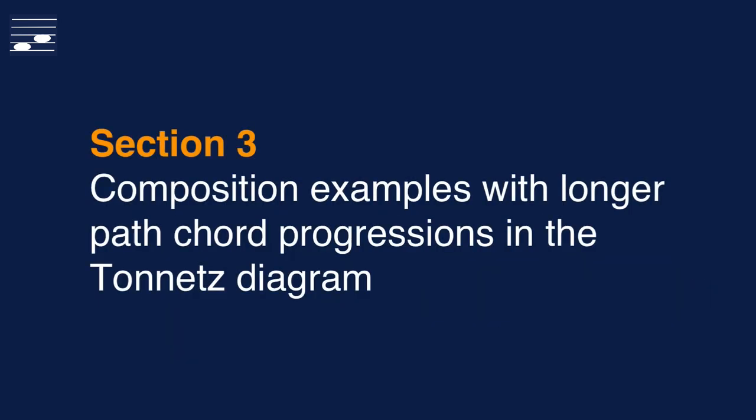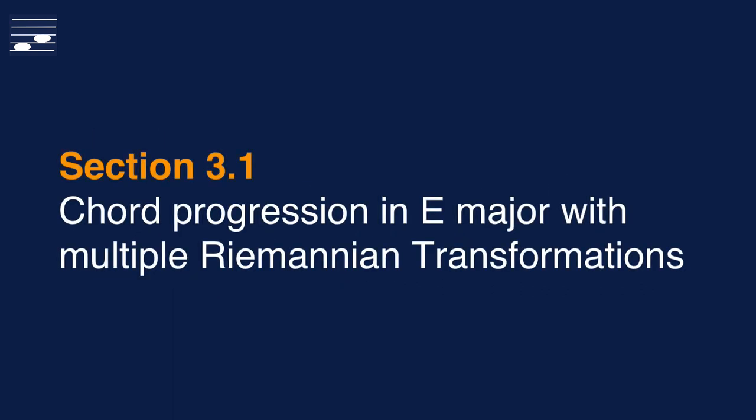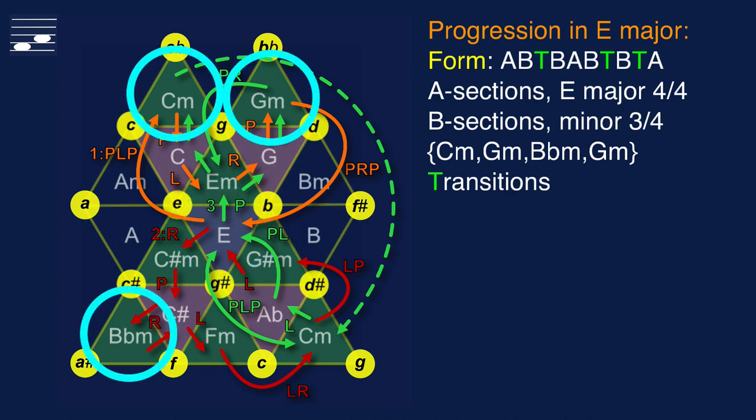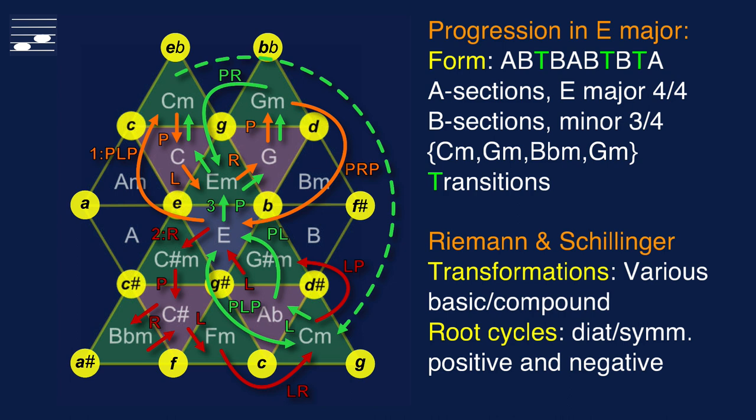Now let's turn our attention to the two long and winding Tonnetz path examples. The first chord progression is in E major and uses multiple Neo-Riemannian transformation types. Here we see the complete Tonnetz trajectory on the left and the form of this composition example on the right. The B sections are in minor and in 3/4 time signature, and these are connected to the A sections through transitions. The arrow patterns in the diagram show the combination of various basic and compound Neo-Riemannian transformations.